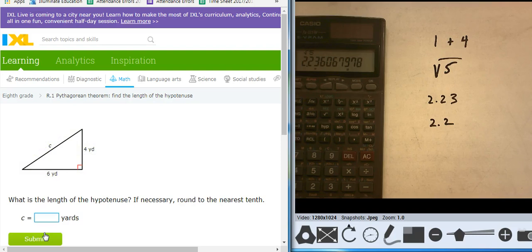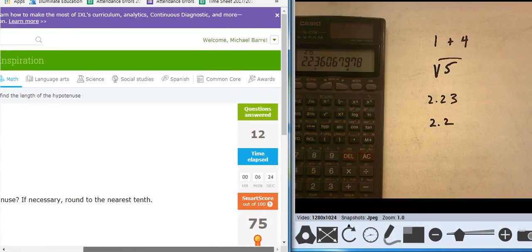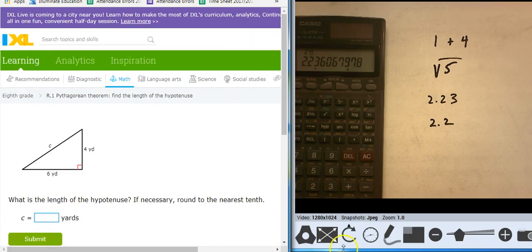All right. There we go. How well did I do on my smart score? Got myself up to about 75. That looks pretty good. It took me about six minutes. Excellent. Thank you for watching. Have a great day.